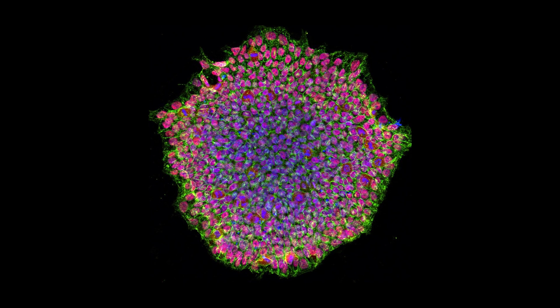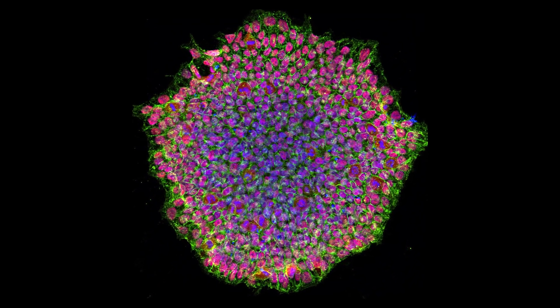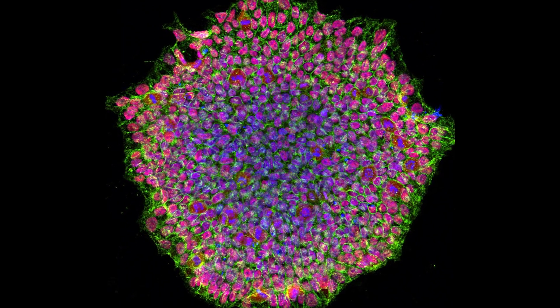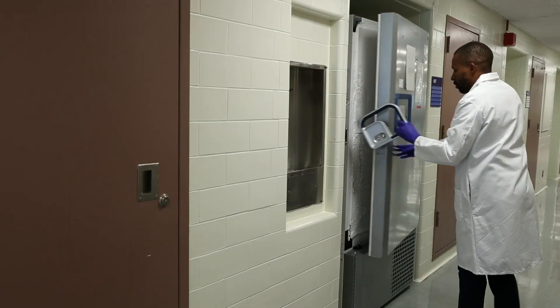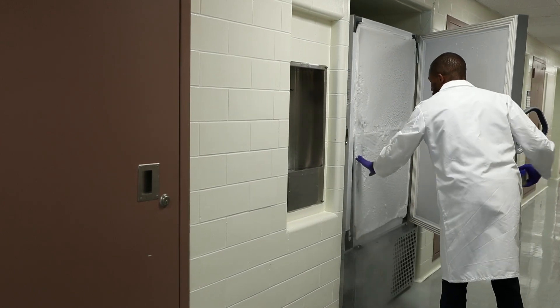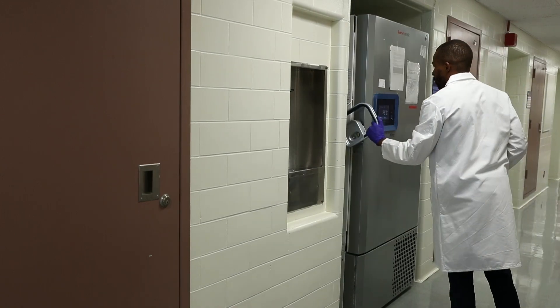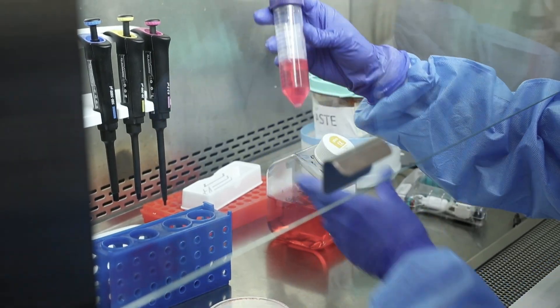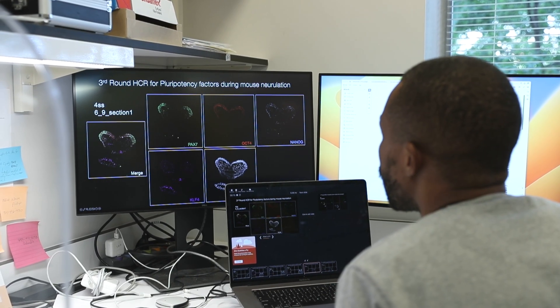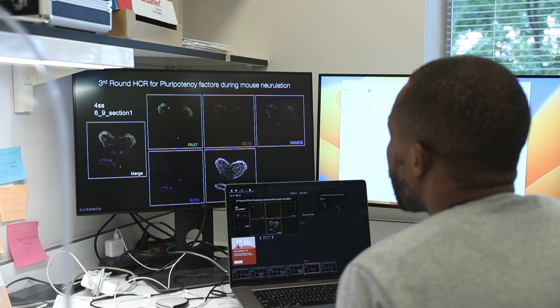I'm using induced pluripotent stem cells and directed differentiation. I can give those stem cells different growth factors and media that will help differentiate them into neural crest stem cells. Then I can change that media and further differentiate them into a bone precursor, or a cell that's going to make bone. We also measure gene expression to make sure that the genes that should be upregulated when cells have become neural crest stem cells are actually upregulated.